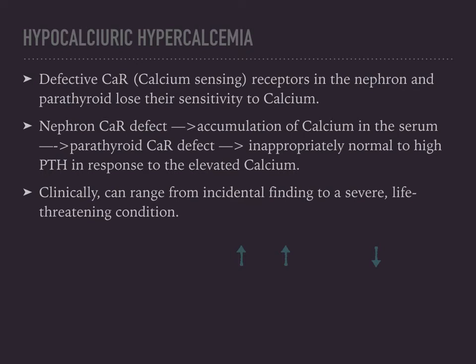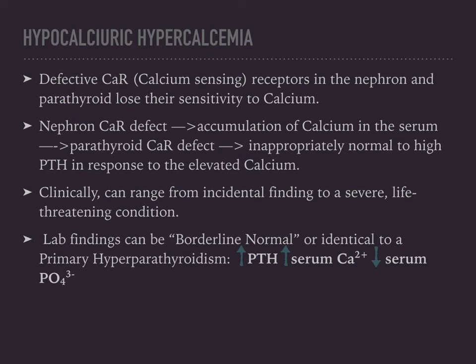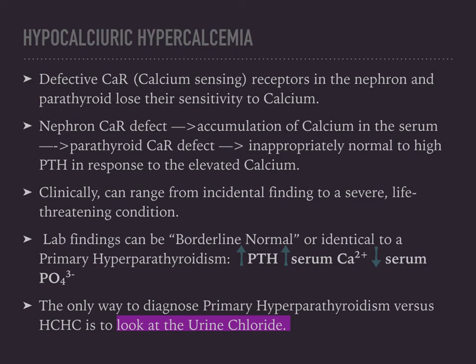Clinically, hypocalciuric hypercalcemia can range from an incidental finding — such as abnormal values on pre-op lab work with no symptoms — to a severe life-threatening condition like severe hypercalcemia. The lab findings can be borderline normal or identical to primary hyperparathyroidism: elevated PTH, elevated serum calcium, and decreased serum phosphate. The only way to distinguish primary hyperparathyroidism from hypocalciuric hypercalcemia is to look at the urine calcium.